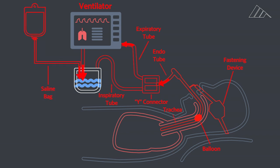A saline bag will drip water down to the humidifier, which moisturizes the gas running through the inspiratory circuit to the patient. The patient exhales through the expiratory tube,